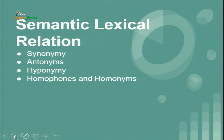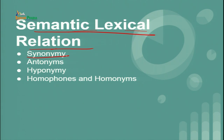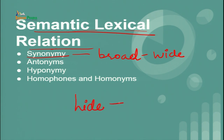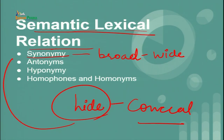Now, semantic lexical relations show how words in a sentence play an important role with respect to meaning. The first is synonymy — the relation between two or more forms with very closely related meanings. For example, 'broad' and 'wide' are synonyms, and 'hide' can sometimes be replaced with the word 'conceal.'